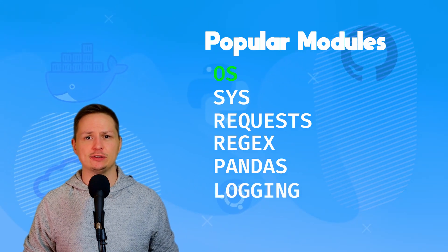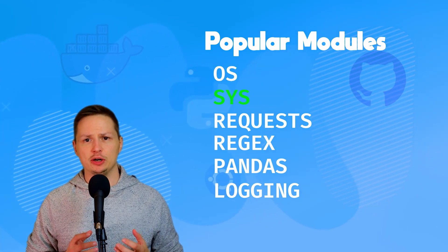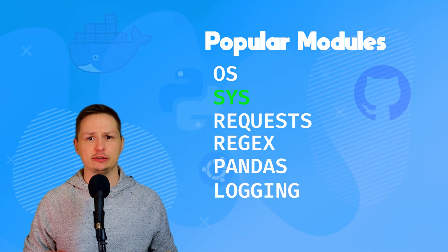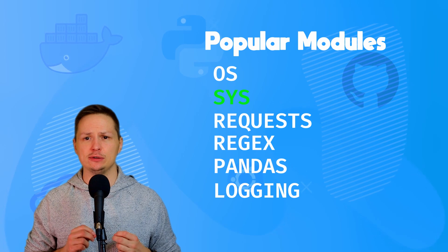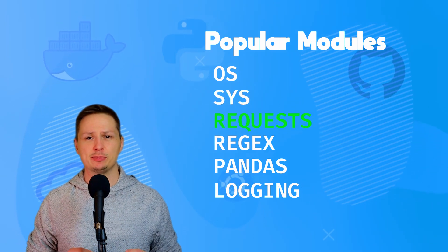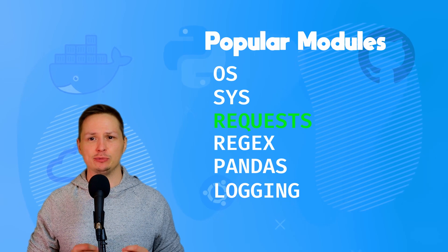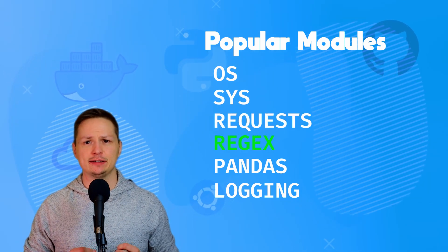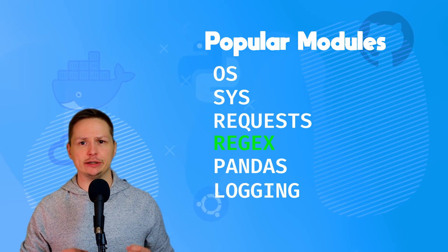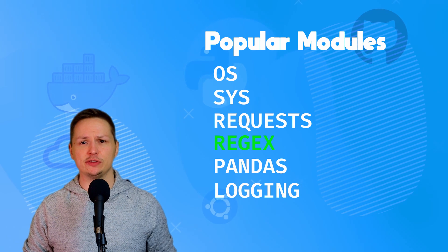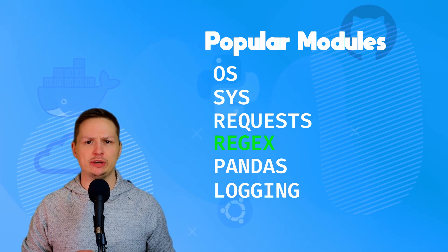The 'os' module gives you access to the underlying operating system — things like listing files in a directory or returning a system's hostname. The 'sys' module gives access to variables within the Python interpreter; a common function is 'argv', which provides access to arguments the user specified when running the script. The 'requests' module lets you send HTTP messages and is popular for creating web scrapers or working with RESTful APIs. 'Regex' is the module for regular expressions — powerful tools for searching and finding data, with syntax that takes practice but becomes manageable.